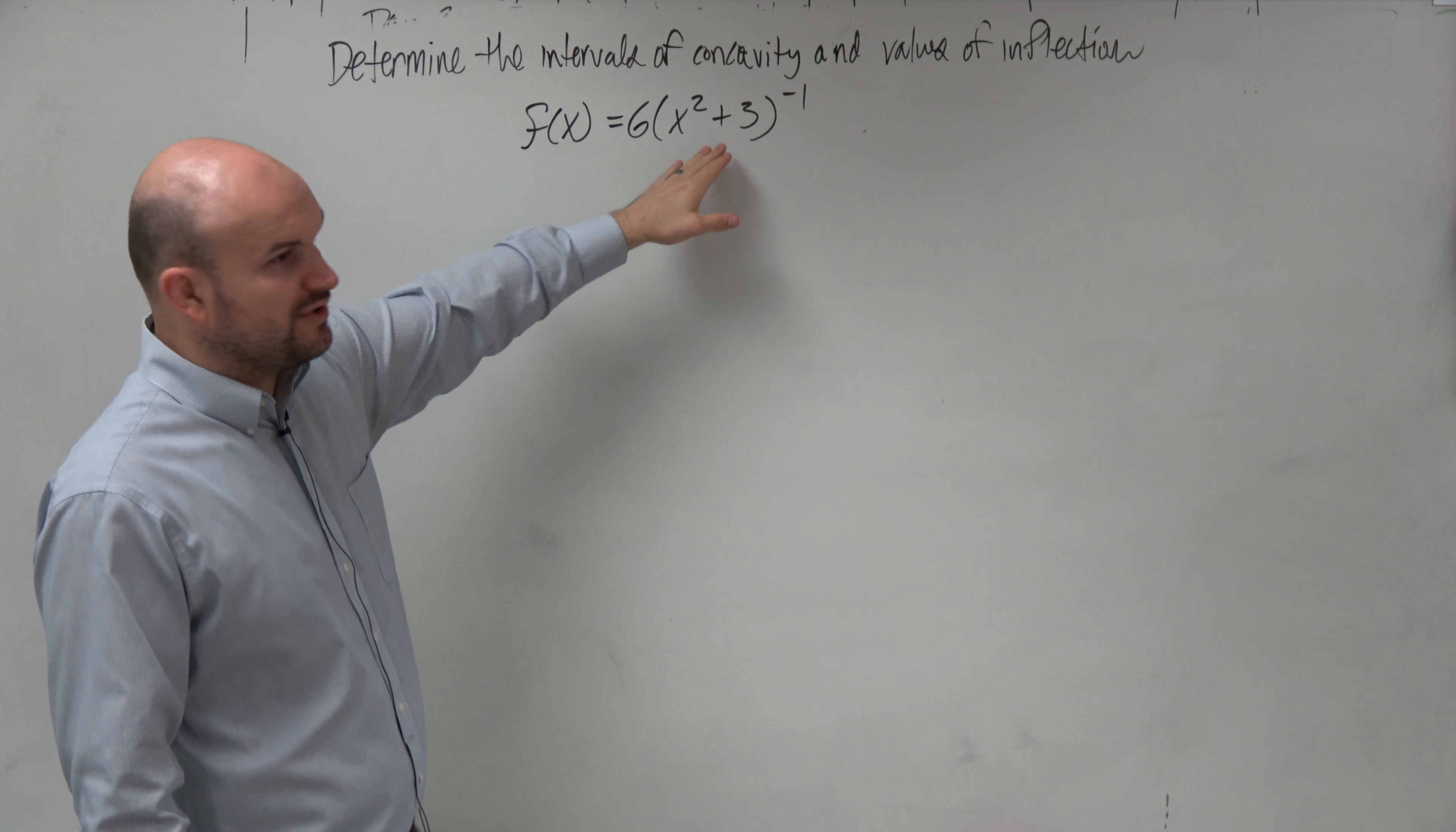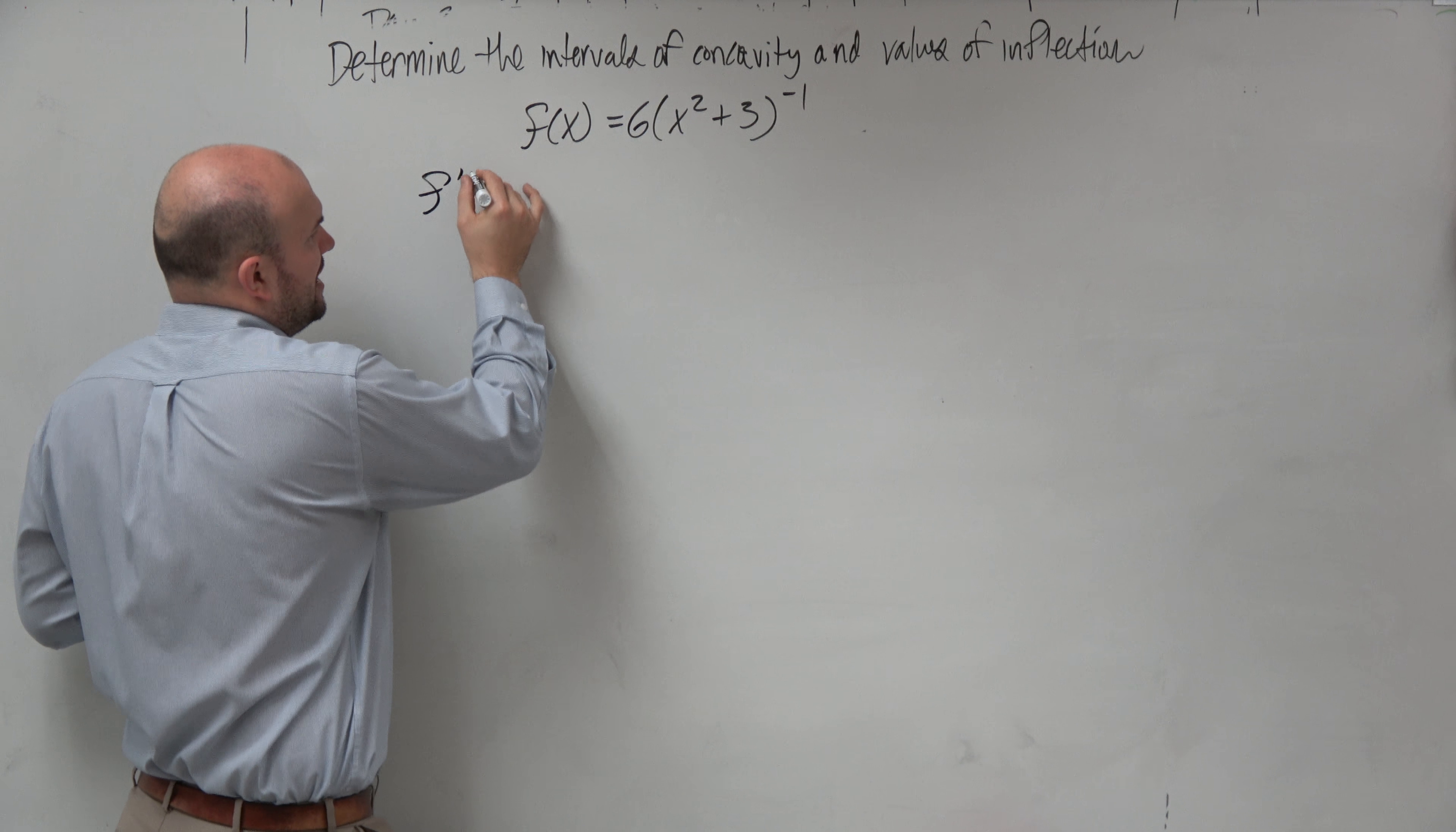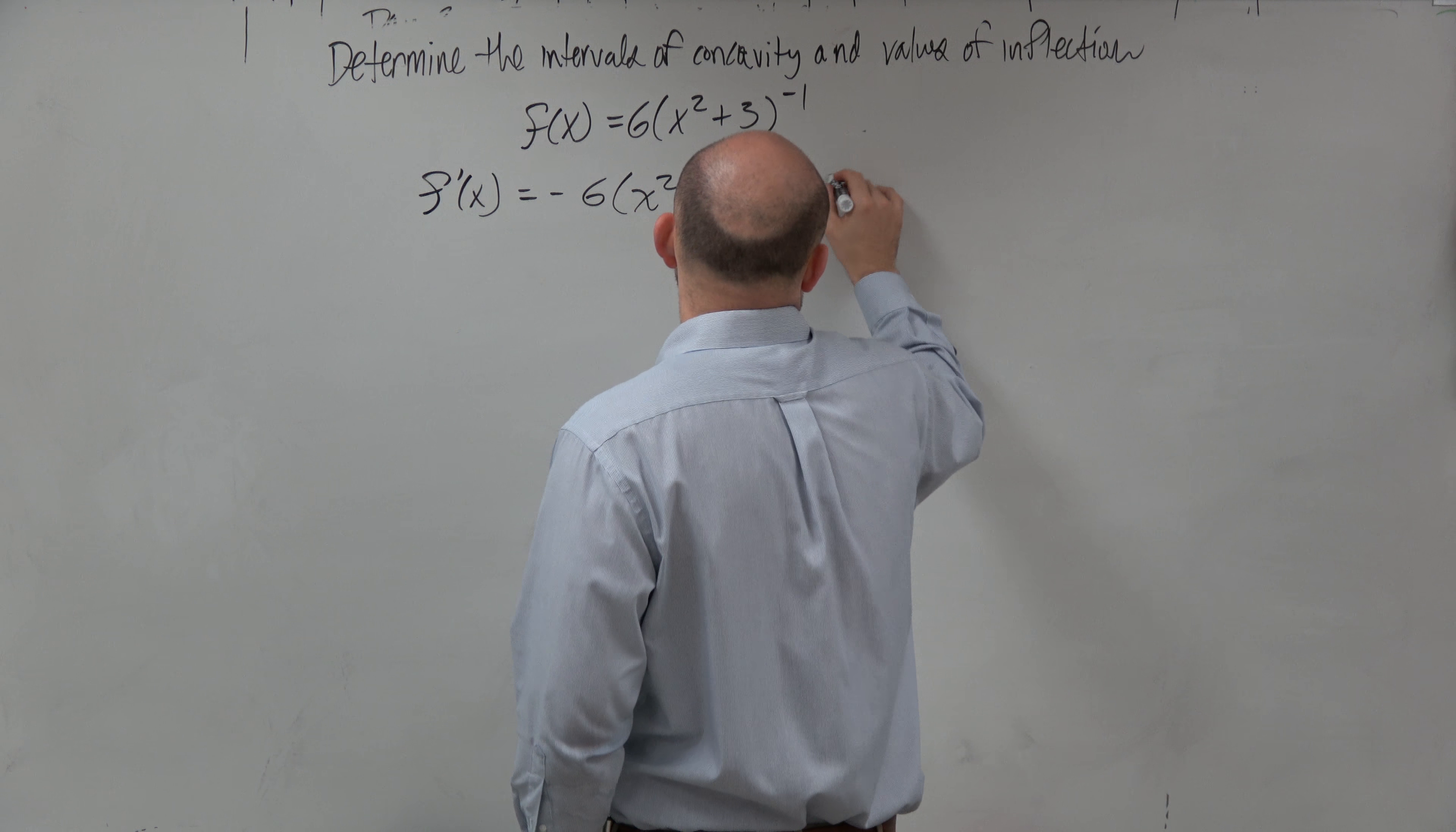So first derivative, we could replace this by putting it in the denominator and do the quotient rule, but we really don't like doing the quotient rule. So another thing we could do is just do the power rule. By applying the power rule, I would have negative 6 times x squared plus 3 to the negative 2 times 2x.